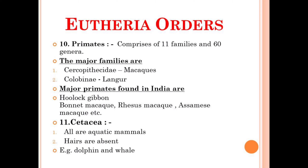The next order is the Cetacea, and all the animals belonging to this order are aquatic mammals and they don't have hairs. For example, you can note down the dolphin and whale.